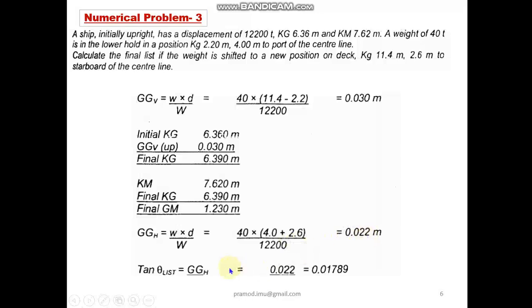So if you take the ratio tan θ = GGh / GM, you will get the final value 0.022, or θ will be 0.01789 degrees. So this is how we solve this question. The final list is one degree to the starboard because the shifting has happened to starboard. So this is how we solve this question. I hope you have understood. And again if we discuss another question.